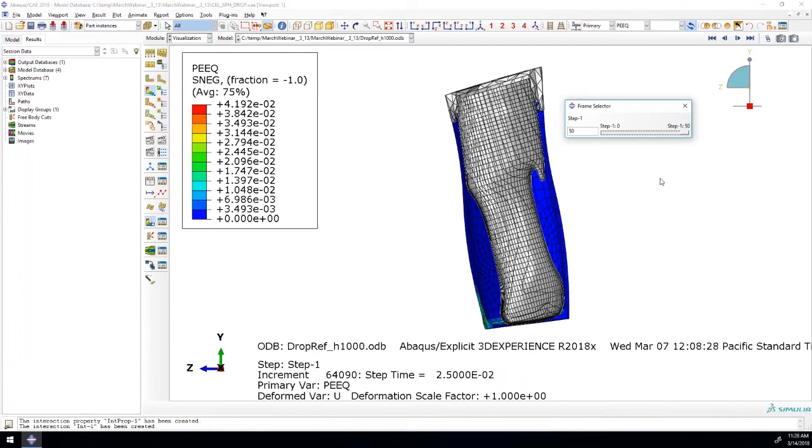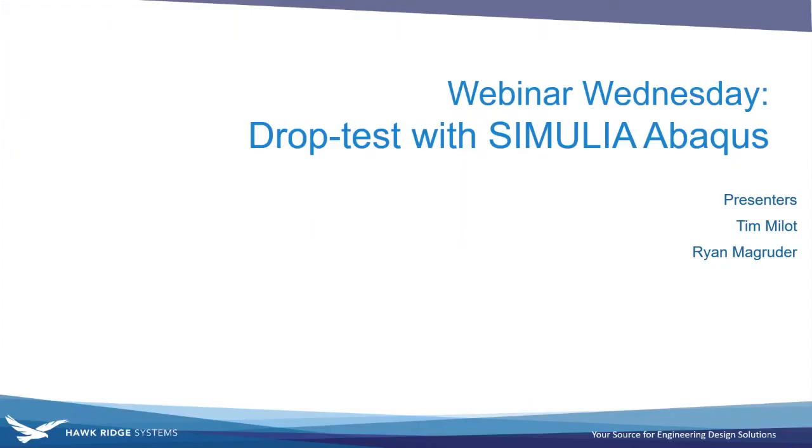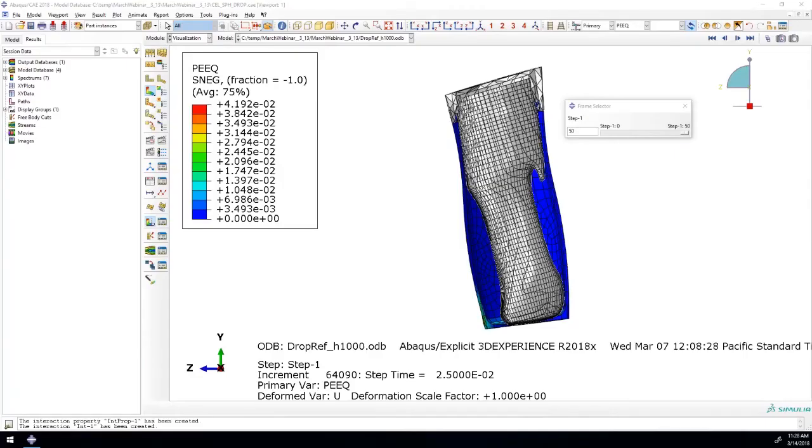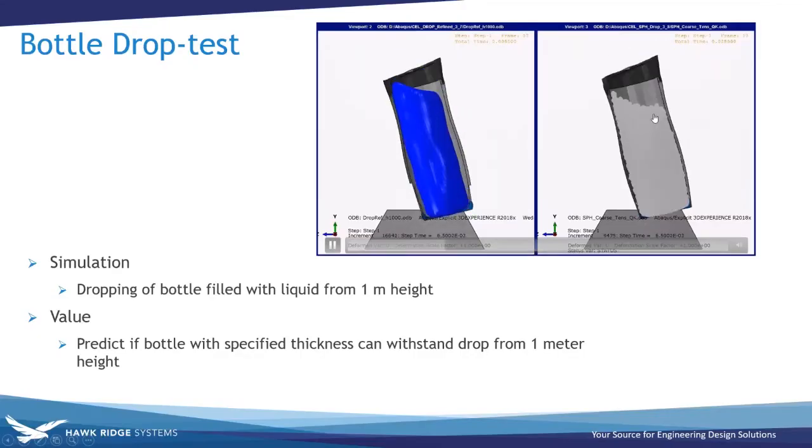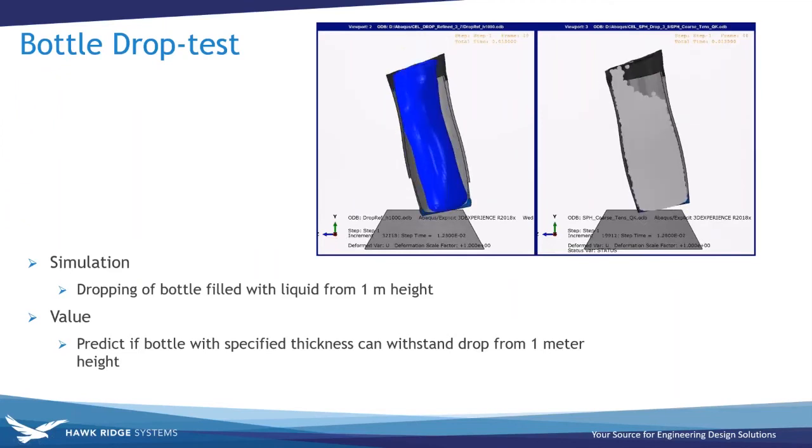That's all that there is for this example. The drop test plugin automates a lot of that work that we would need to do in advance. It certainly can allow you to set up a bunch of these very quickly and get those all run to see some results from some different steps. Let me get back to our PowerPoint here. Let me turn it back over to Tim here to take a look at some of the differences between the CEL and a separate SPH run that we had.